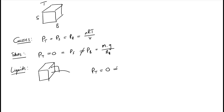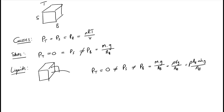This implies that the pressure on the side is higher than the pressure at the top and gets higher as we go down. So we know P_T equals zero, P_S is not equal to P_T, and P_B is not equal to P_S. P_B equals the mass of the system multiplied by the gravitational constant over the area at the bottom. The mass of the liquid equals the density multiplied by the volume, and the volume equals the area at the bottom multiplied by the change in height. The areas cancel out, giving P_B equals ρgΔh.